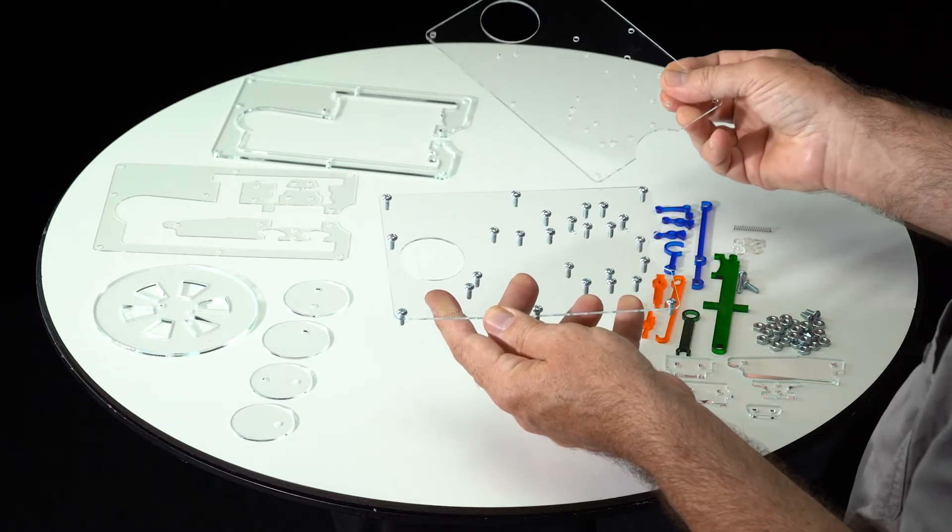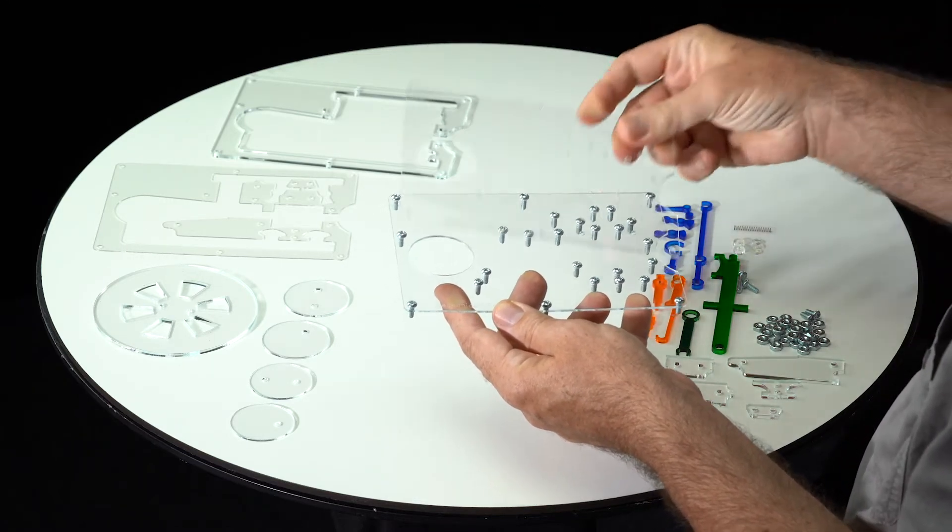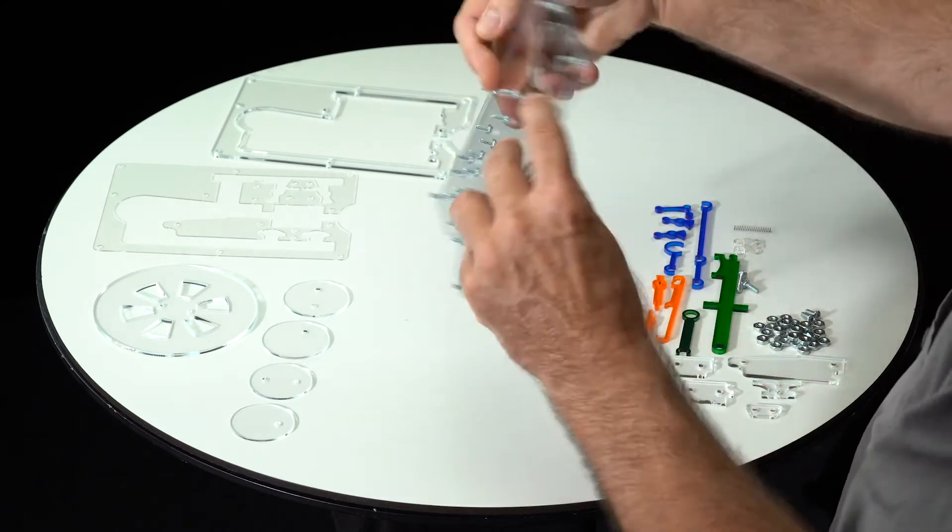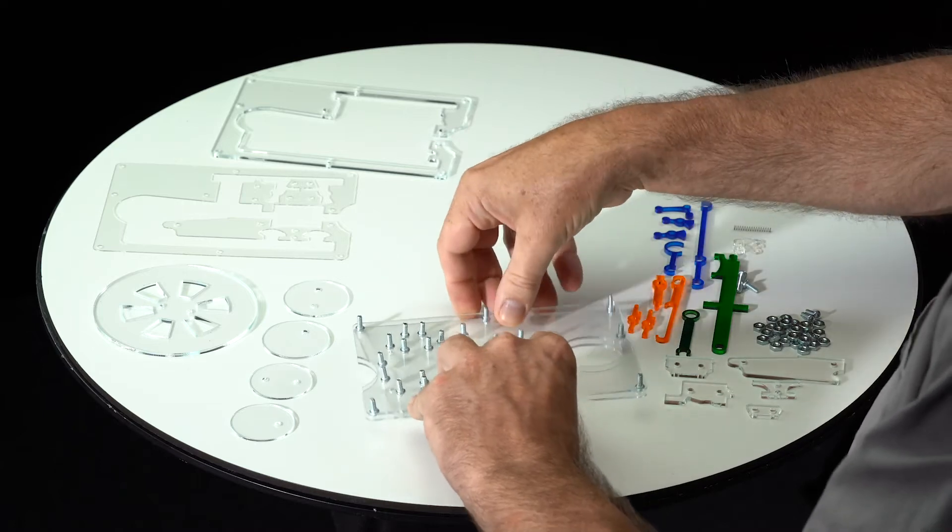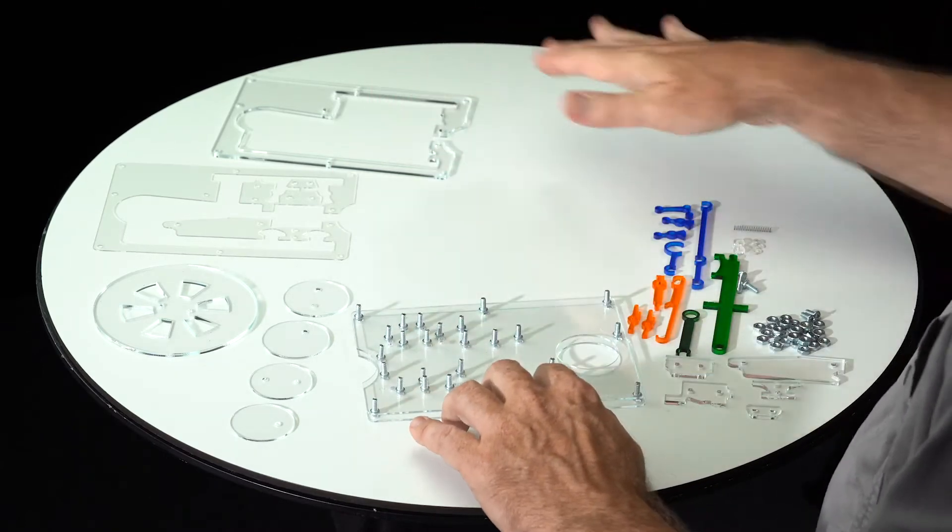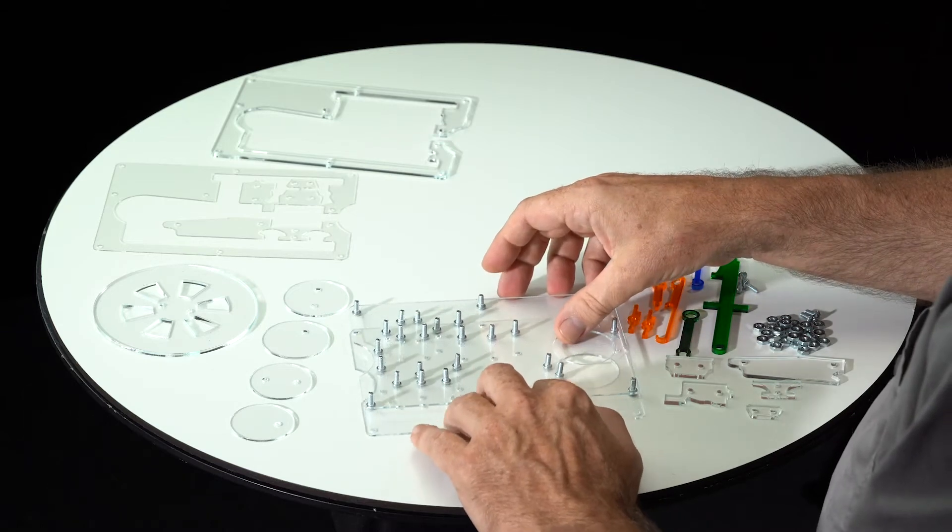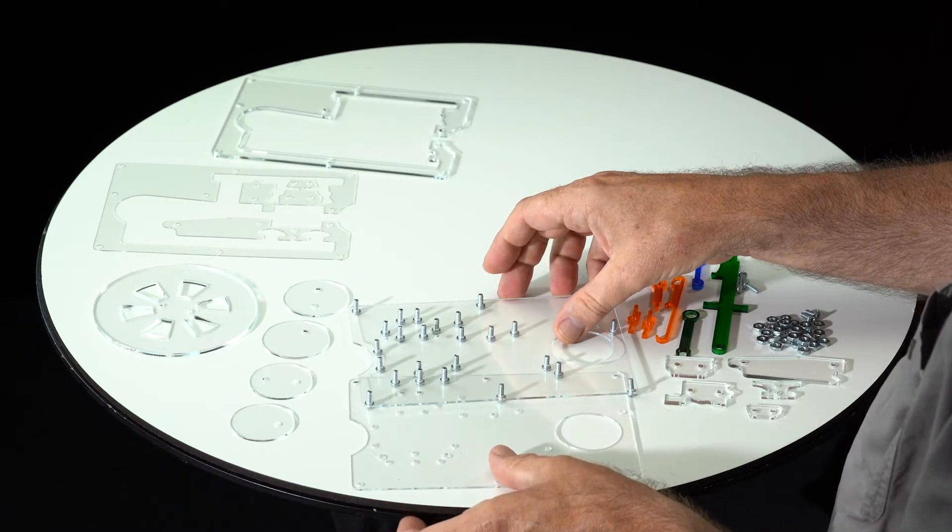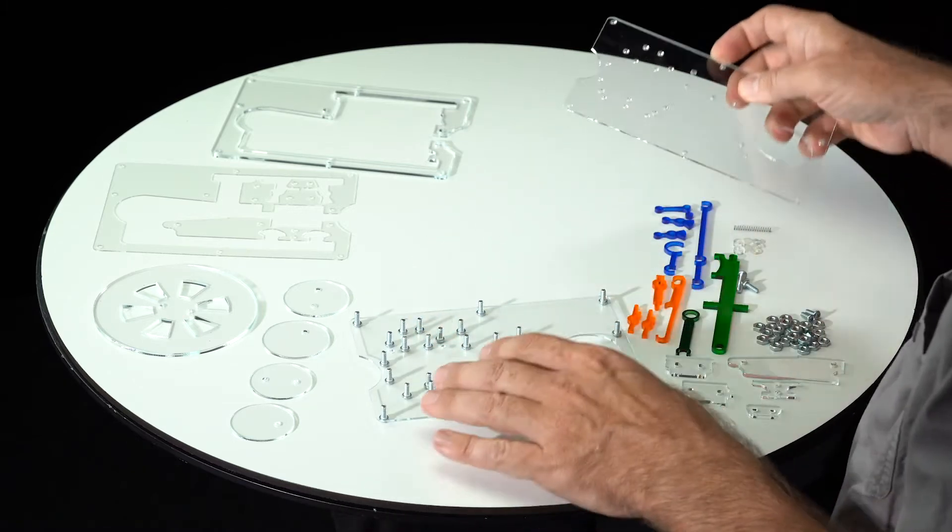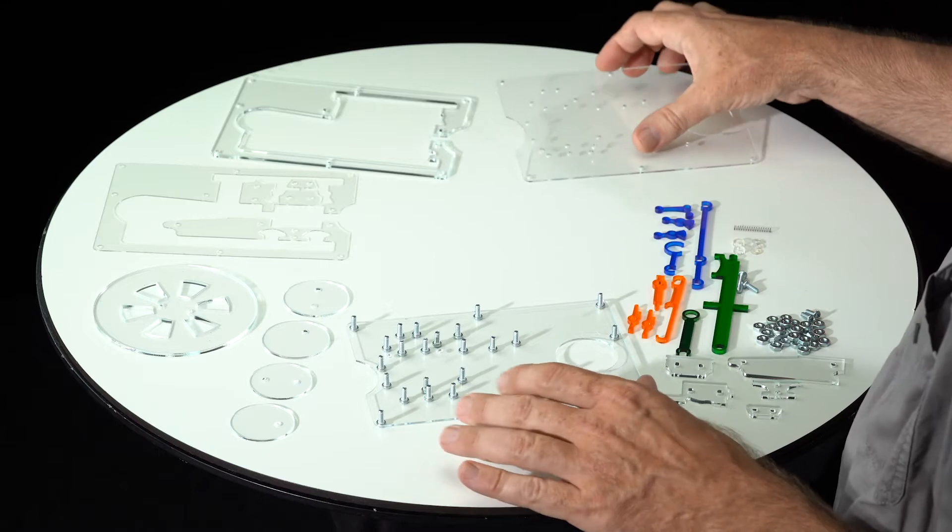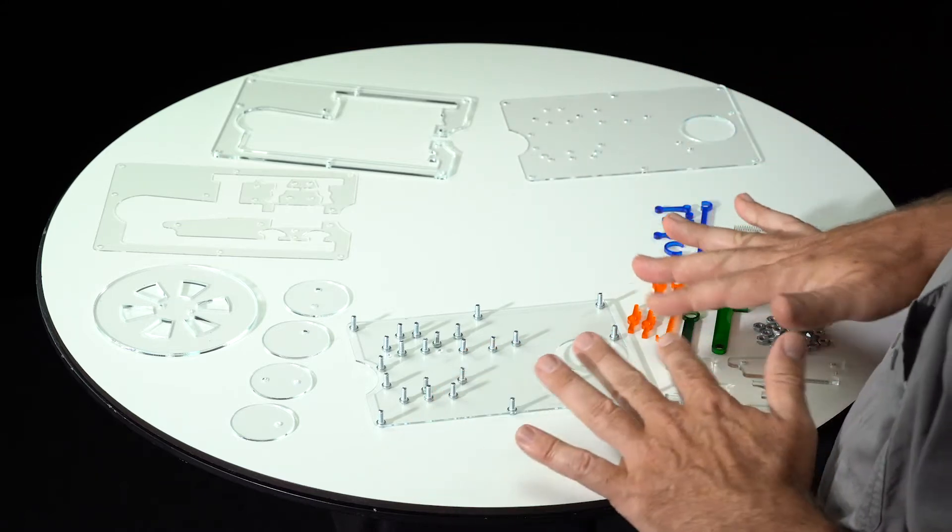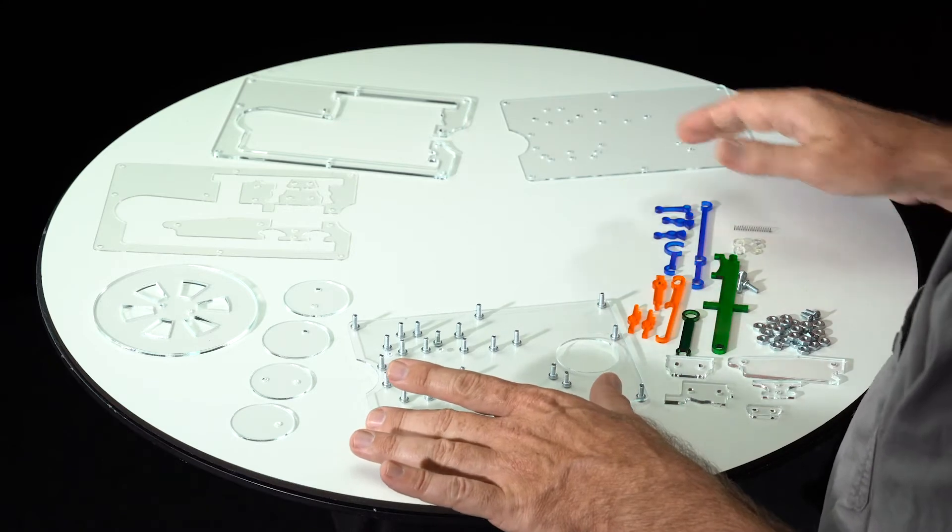So now I've got every screw everywhere except those two intake holes. Now we take this other piece, just temporarily we're going to use it to hold all the screws in place. Press it on like this, flip it upside down, and set it down. Now slide this out, and now we're left with all these screws sticking up. And we can now begin to assemble pretty much the entire mechanism here.